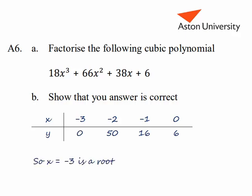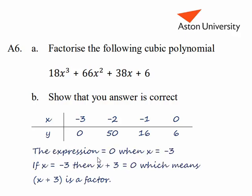So that means that x minus 3 is a root. If x minus 3 gives a value of 0 for the expression, then by moving minus 3 to the other side of the equals sign, we get x plus 3, which is the factor.